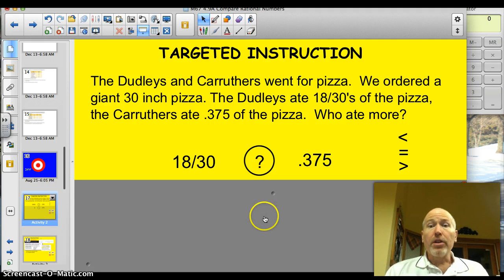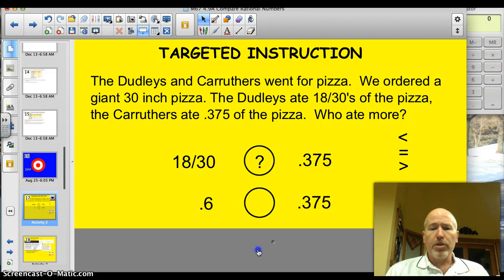Well, I'm going to tell you the shortcut. Convert it to decimals! Take your calculator over here. Convert 18-thirtieths to a decimal. You're going to get 0.6. Now you've got 0.6 of what the Dudleys ate. Now you've got what the Crothers ate. Choose the right symbol.